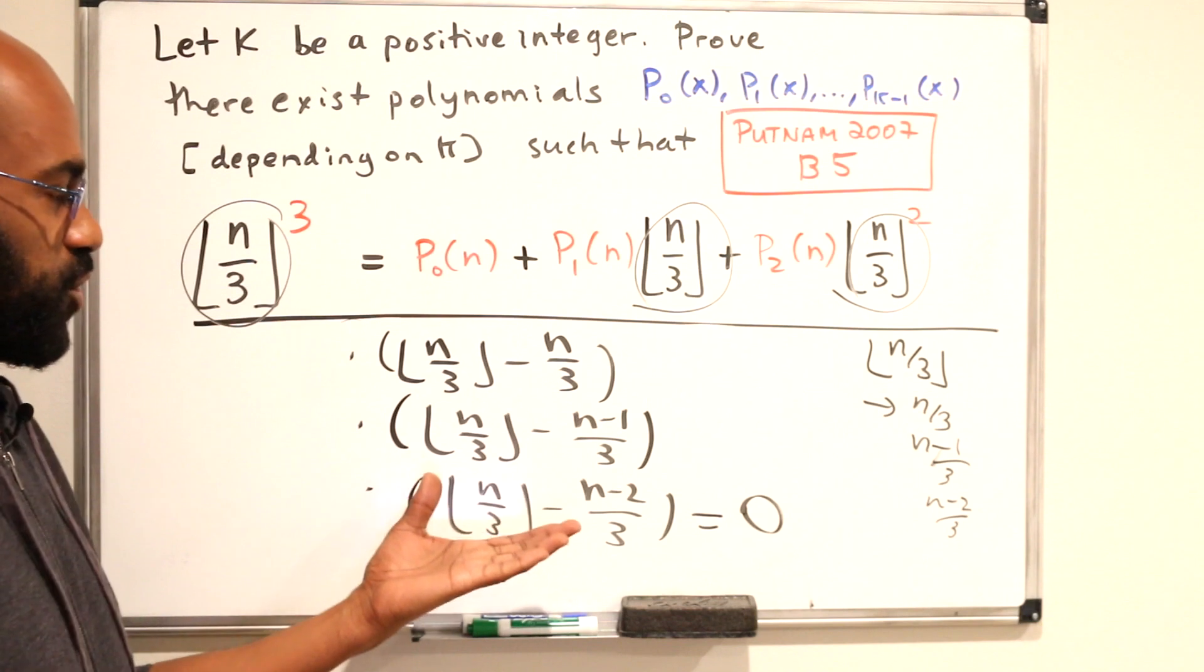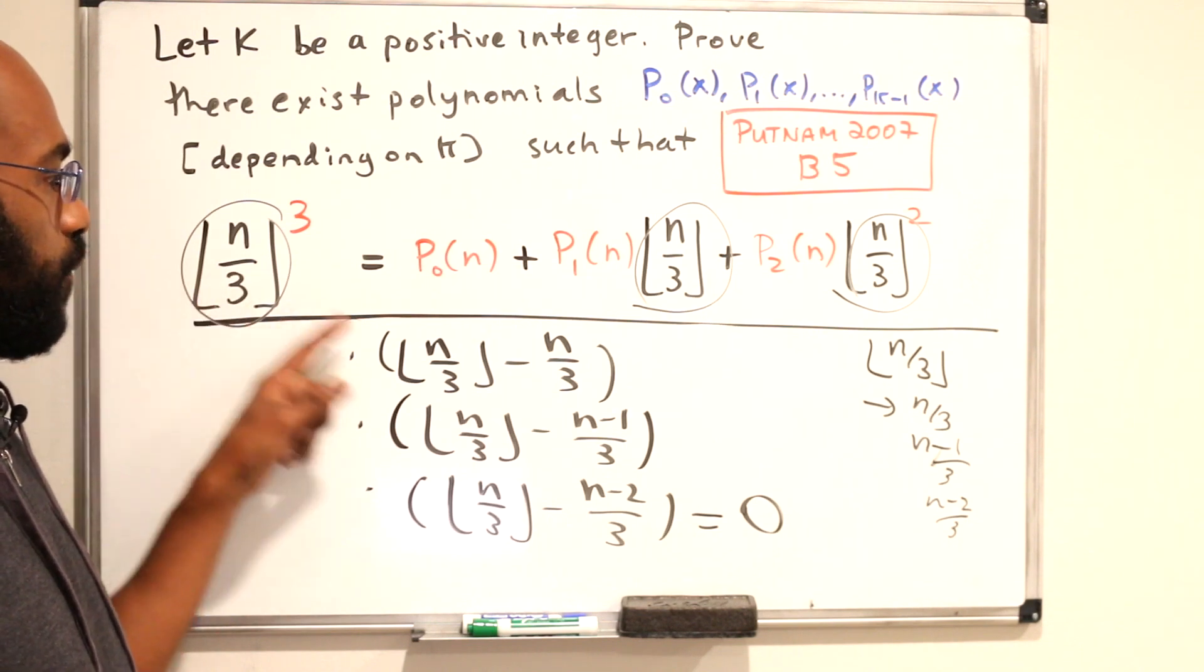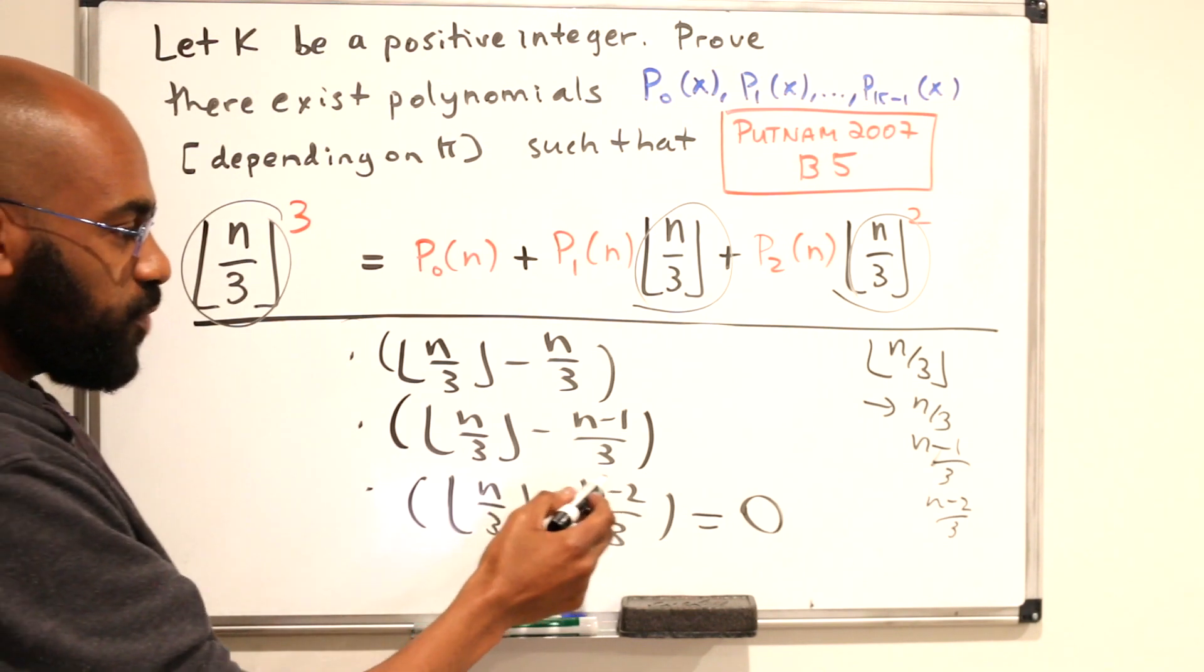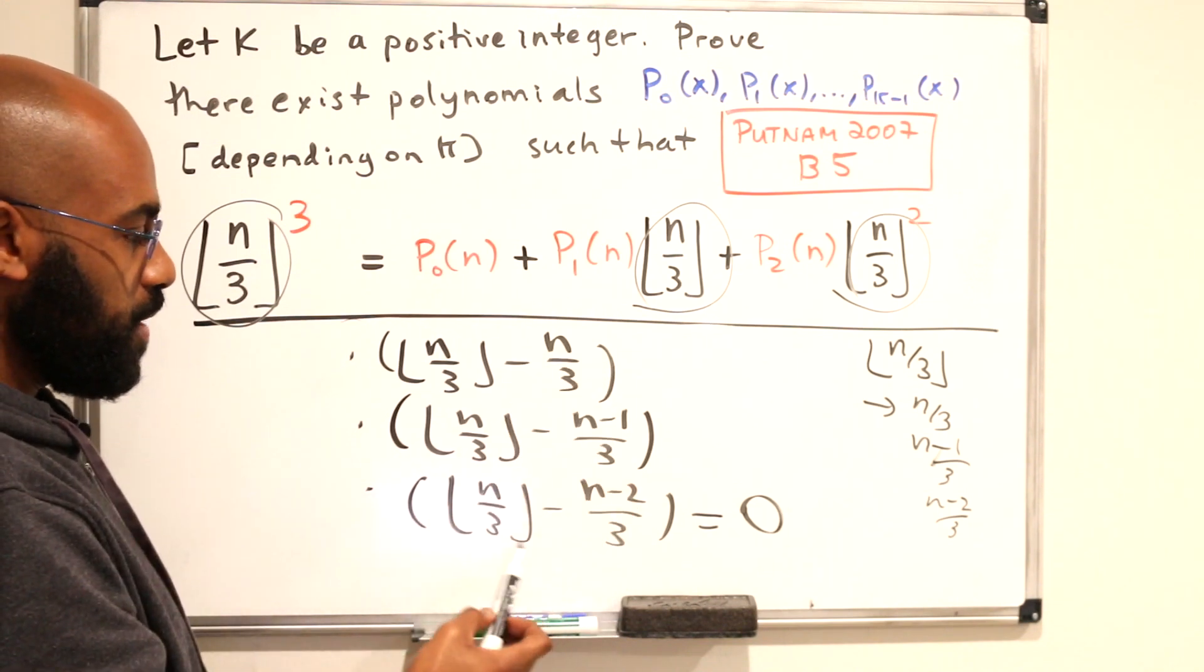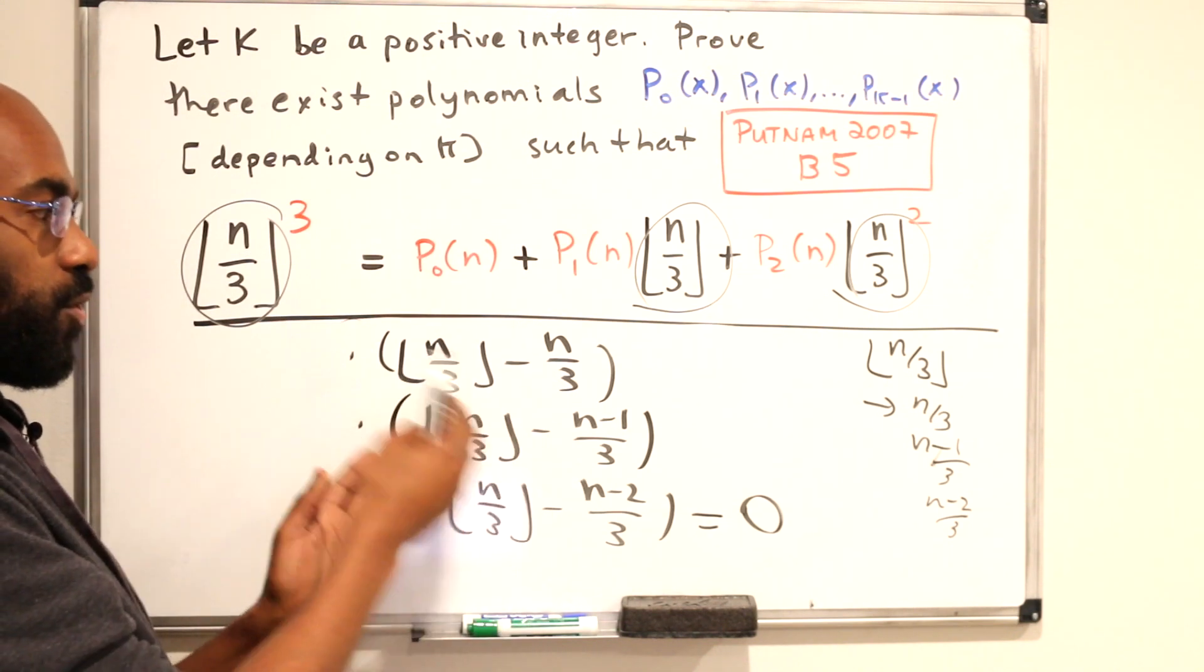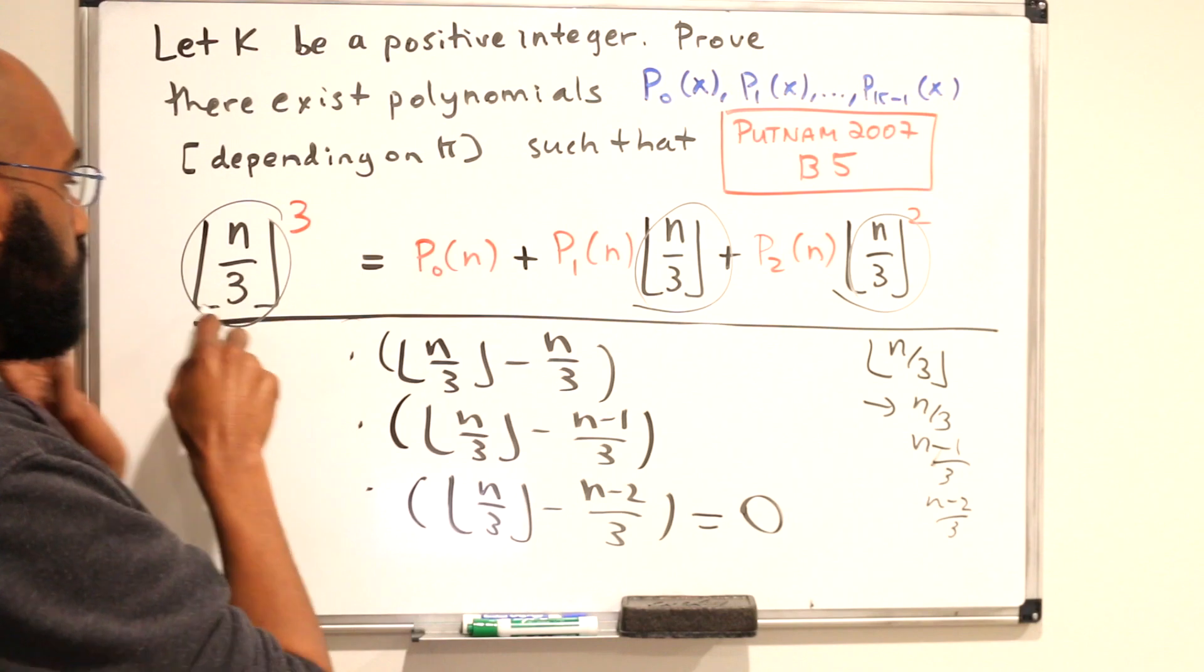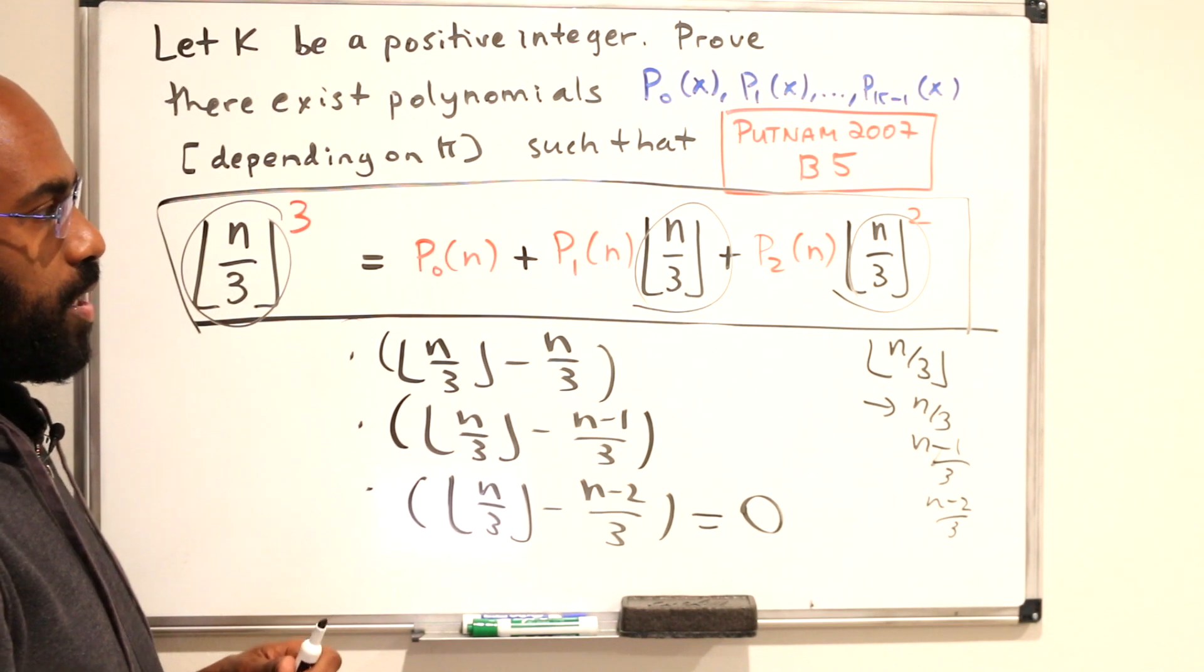Alright, well what happens if we expand an expression like this? We'll get the floor of n over 3 raised to the 3 with no coefficient beside it. And then we'll get a bunch of expressions that have coefficients involving n, or these numbers right over here, expressed in terms of the floor of n cubed, the floor of n squared, the floor of n, and then just the constant coefficient. And so this will look exactly like an expression like this. Oh, that's kind of cool.